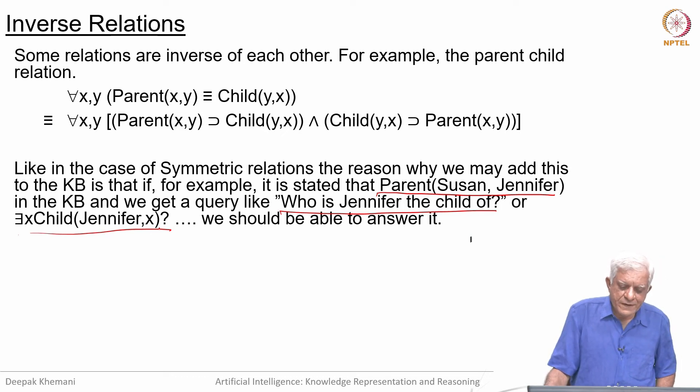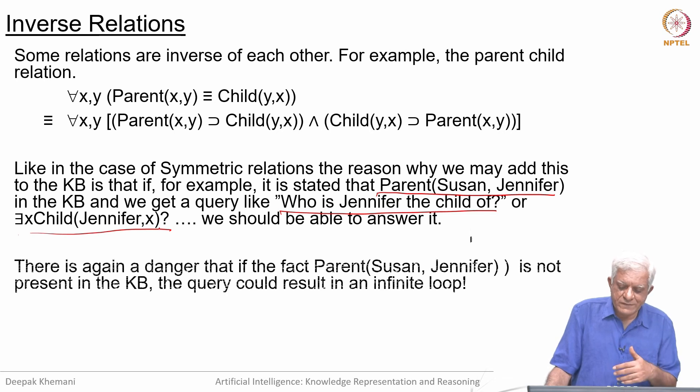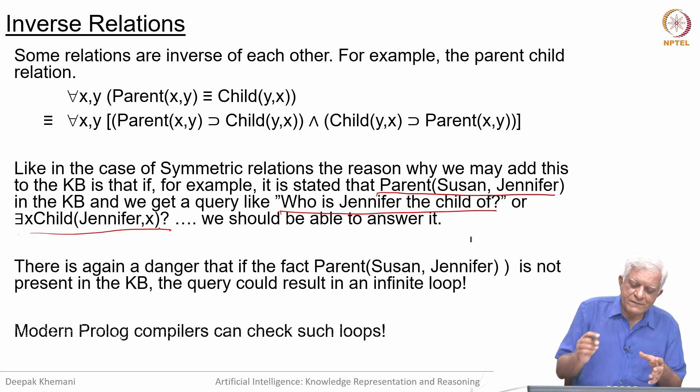And again, there is a danger that if the fact is missing, we could keep going back and forth between parent and child. Jennifer is the child of someone, that means someone is a parent of Jennifer, that means Jennifer is a child of someone, and so on—we could go into an infinite loop. We would like to avoid such infinite loops.